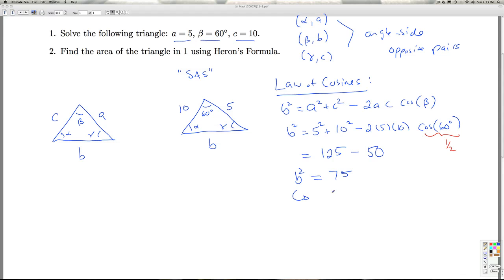So, solving B squared equals 75 gives me B plus or minus square root of 75, but since B is supposed to represent the length of the side of a triangle, I'm going to take the positive square root, and so this simplifies. This is 3 times 25, that's 5 radical 3.